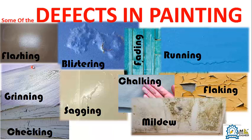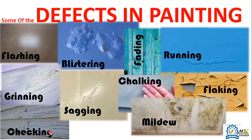Here are some defects that we are going to discuss in this video: flashing, blistering, fading, running, grinning, sagging, chalking, flaking, mildew, and checking. These will be discussed one by one in the upcoming slides.